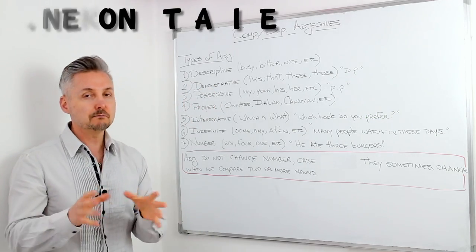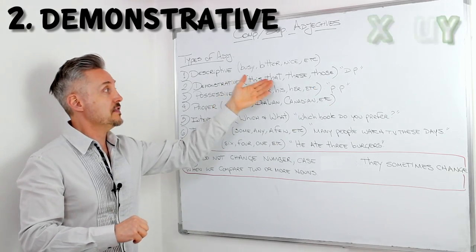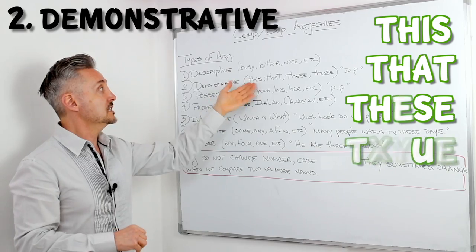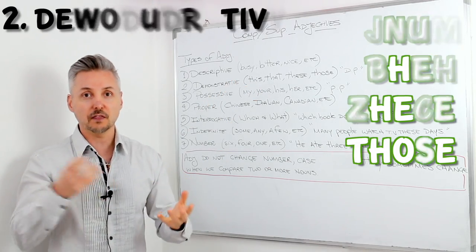Then demonstrative, much like the demonstrative pronouns. This, that, these, those. This child drives me crazy, for example. This child.